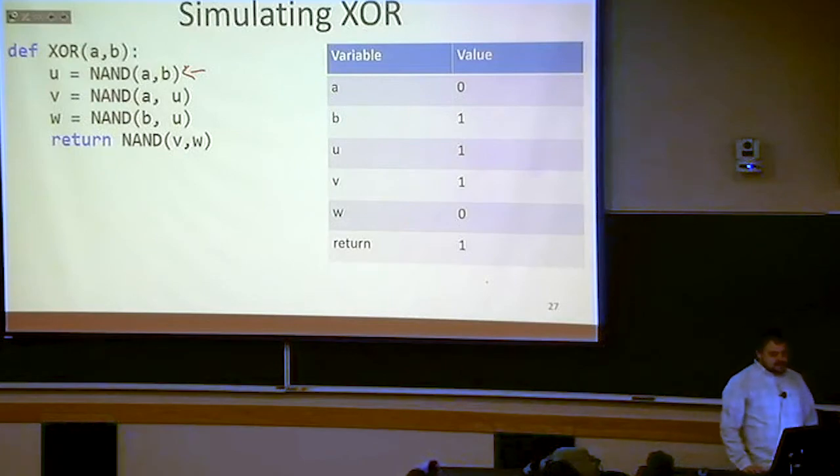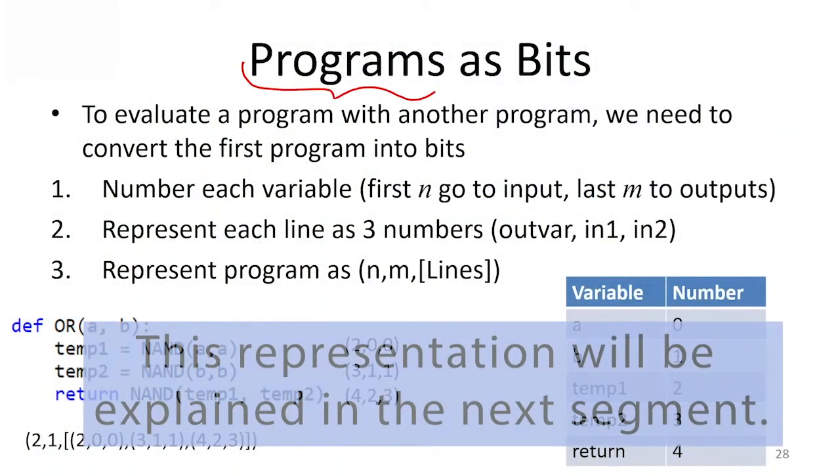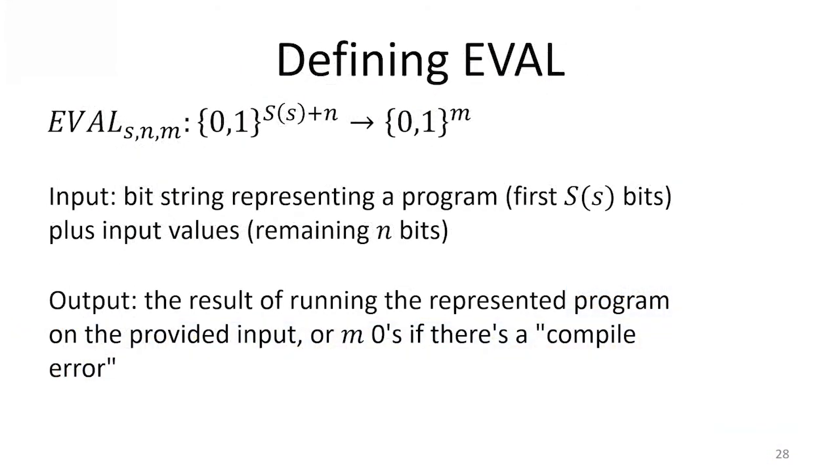The first thing that we're going to need to do in order to simulate our program is to figure out how we can represent our program as bits. We're going to define this function that I'm going to call eval. We're going to hand it a description of a circuit or a description of a program and an input, and it's going to evaluate that program for that input.